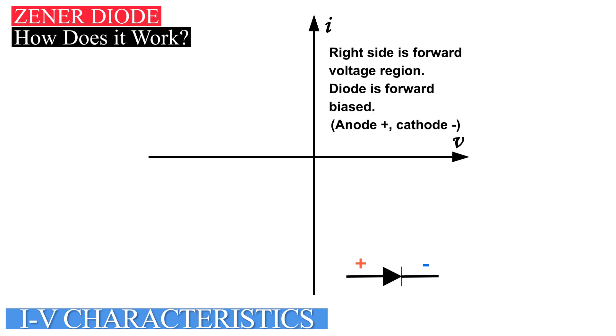The right side of the graph is the forward voltage region where the diode is forward biased. The left side of the graph is the reverse voltage region where the diode is reverse biased.